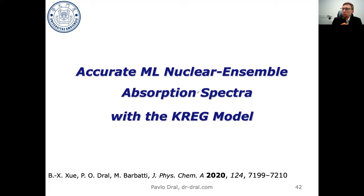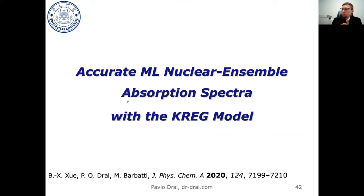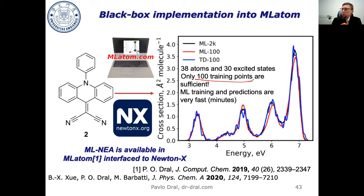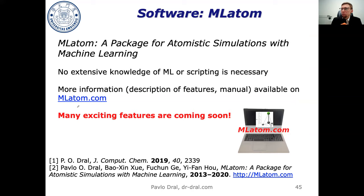Since machine learning is generic, you can apply the same model to learn several properties simultaneously. We exploited this to also learn oscillator strengths and, using the CRAG model with a nuclear ensemble approach, simulate absorption spectra. Training on only 100 reference points from a Wigner distribution was enough to generate more accurate spectra than using the QM method directly. This work was done with members of my young group using the MLatom package for atomistic simulations.